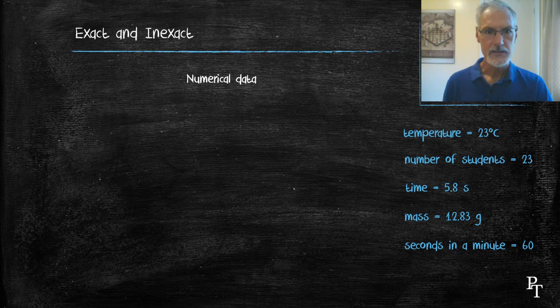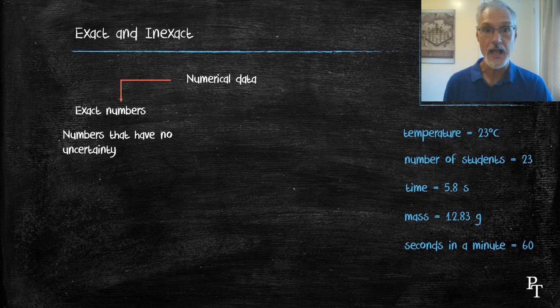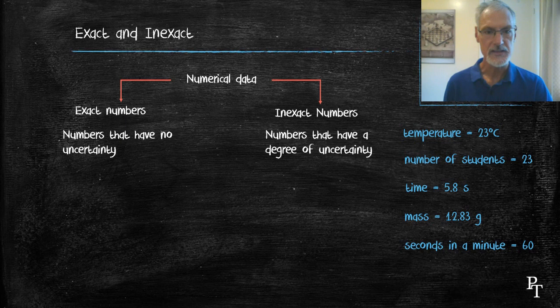I've listed some examples over here on the right-hand side. Numerical data can be broken down into two categories. First of all, that which we call exact numbers, for which there is absolutely no uncertainty, and inexact numbers, for which there is some uncertainty.